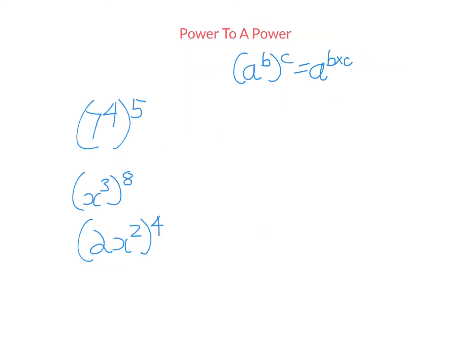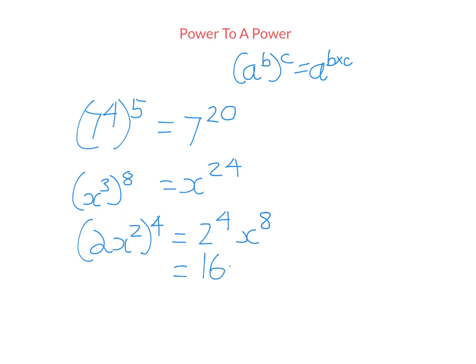The next index law is called the power to a power rule — it's when we have a power and we raise it to a second power. The index law is: keep the same base and multiply the powers. So 7 to the power of 4, to the power of 5 — we don't add these two powers, we multiply them: 4 times 5 is 20. This also works for pronumerals: x to the power of 3 to the power of 8 — keep the same base and multiply the powers. For a trickier example with brackets, raise everything in the brackets to the outside power: 2 to the power of 4 is 16, and x squared to the power of 4 — multiply the powers to get x to the power of 8. So the answer is 16x to the power of 8.